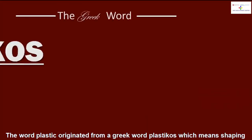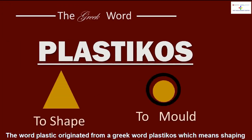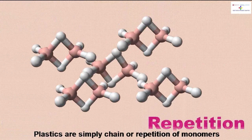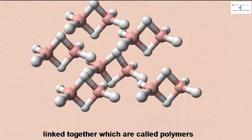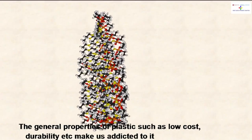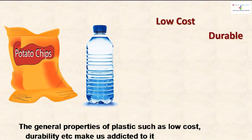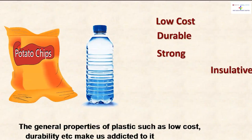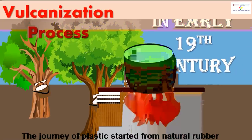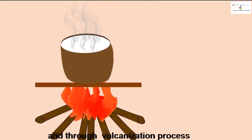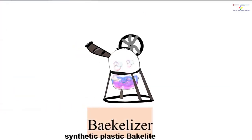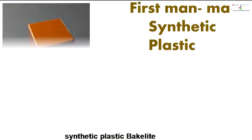Let's consider as an example the most common product in our surroundings: plastics. The word plastic originated from the Greek word 'plasticos,' which means shaping. Plastics are simply chains or repetitions of monomers linked together, which are called polymers. The general properties of plastics — such as low cost and durability — make us addicted to them.